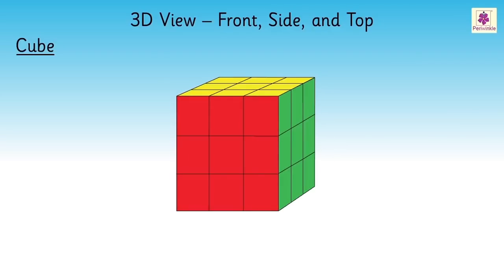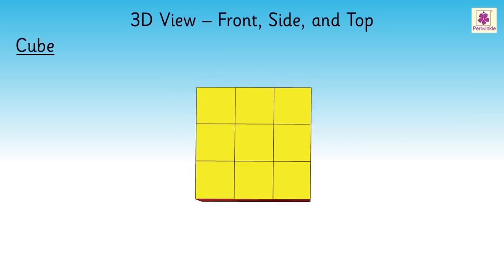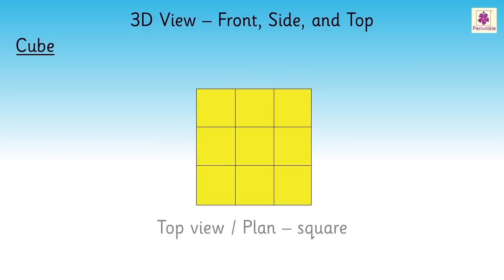Again come back to the original position of the cube. Similarly, the yellow colored face is a top view or the plan. Observe the yellow colored face from the top. It is also a square.